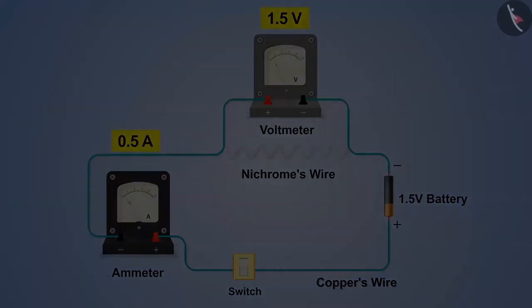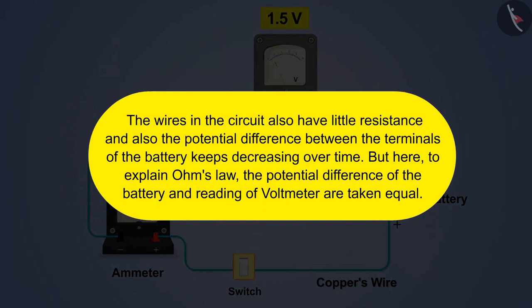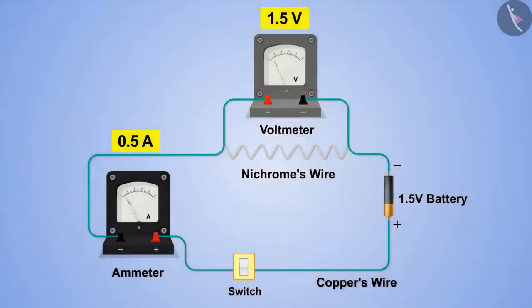One thing to note here is that wires in the circuit also have little resistance and also the potential difference between the terminals of the battery keeps decreasing over time. But here, to explain Ohm's law, the potential difference of the battery and the reading of the voltmeter are taken equal. Do the same process four times and increase one battery each time in the circuit.